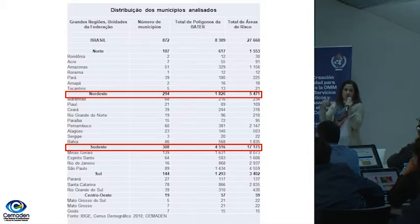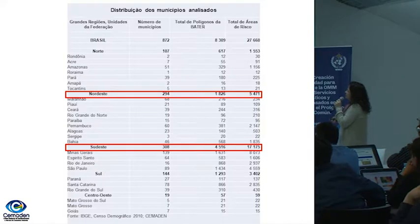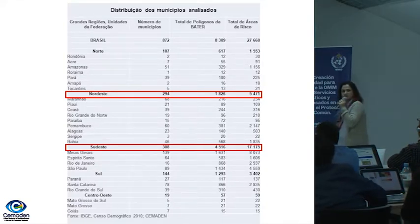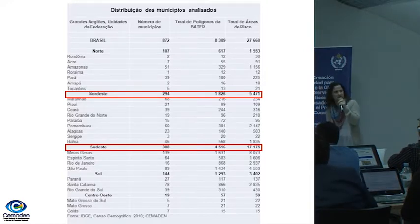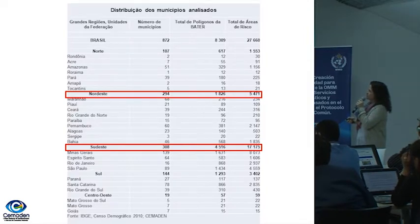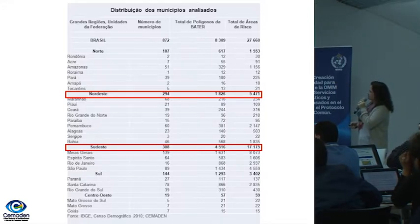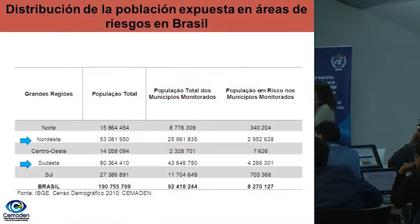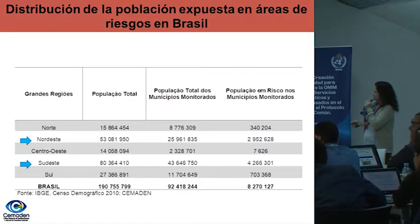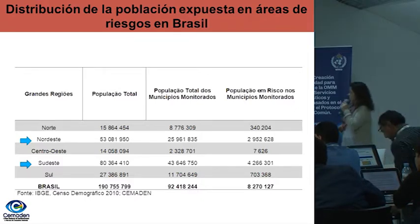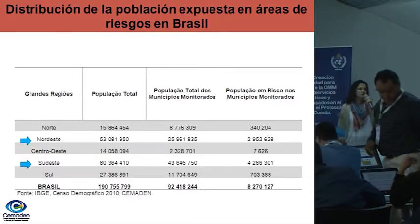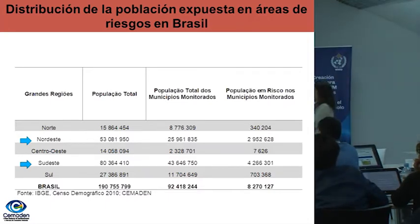This covers 872 municipalities — remember, we monitor about 958. The total risk area for those municipalities is 20,060, including floods and landslides. When the new BATER areas were created, they dropped to 8,309 because they added some areas using a new methodology. You can see the areas with risk in northeast and southeast that still work under the old methodology. We were able to calculate that out of these 872 municipalities, we have over 8 million people in risk areas — so it's many people, of course.